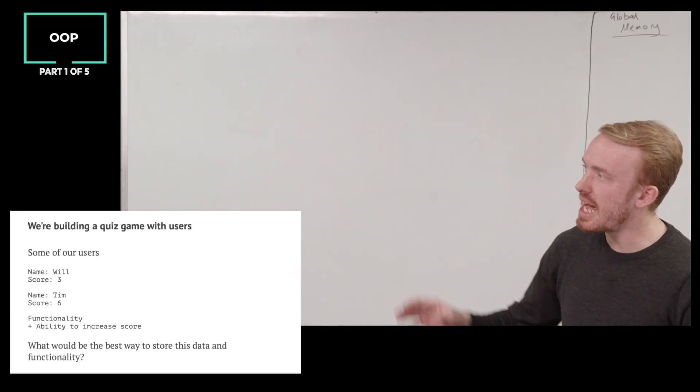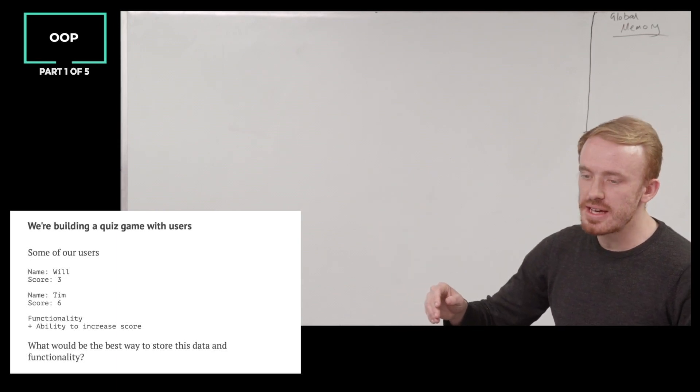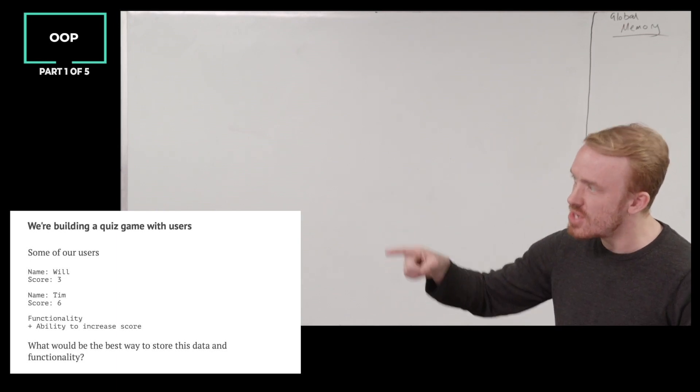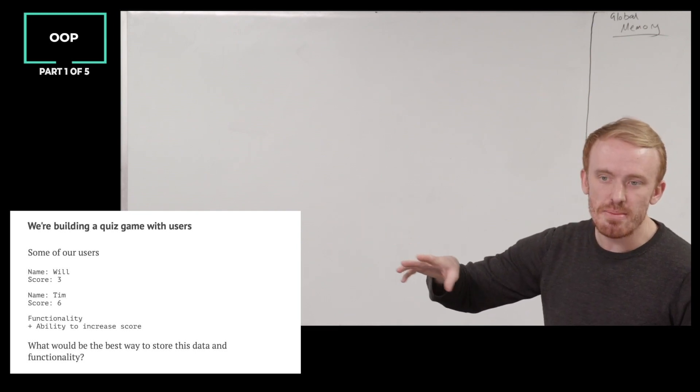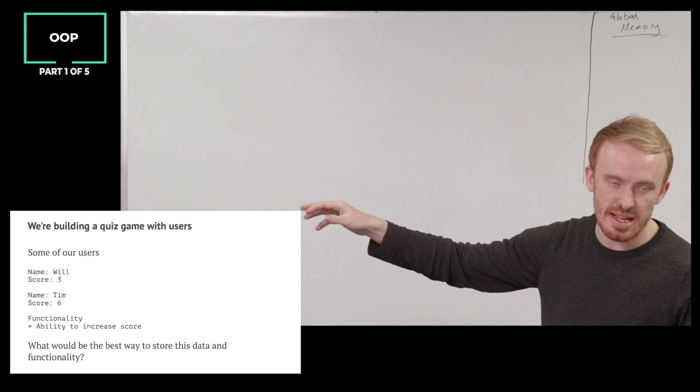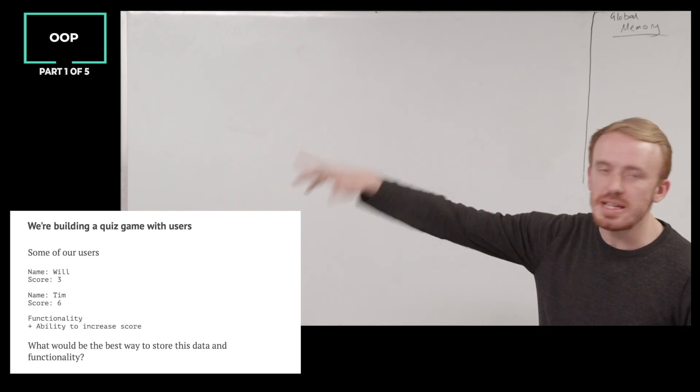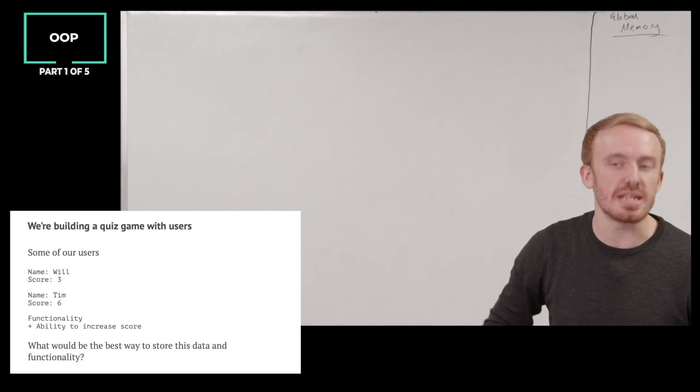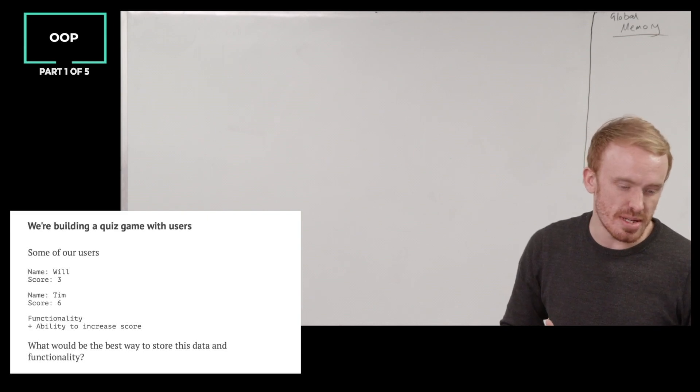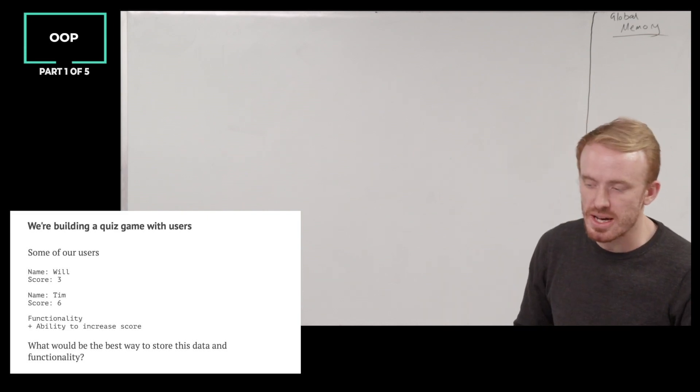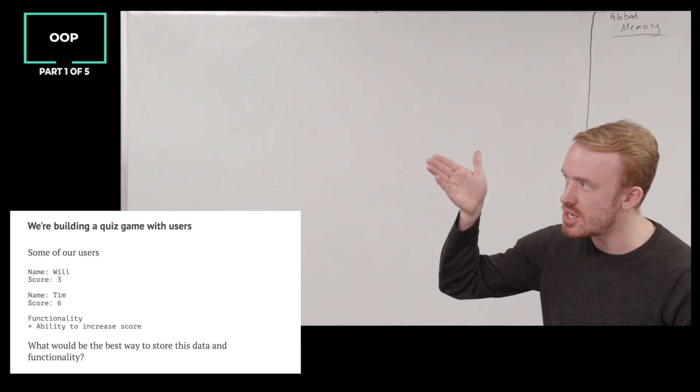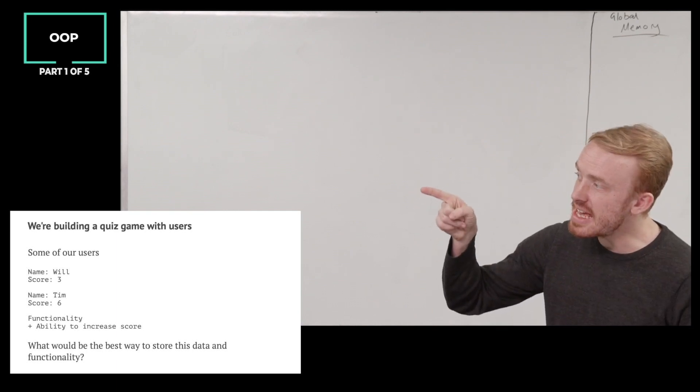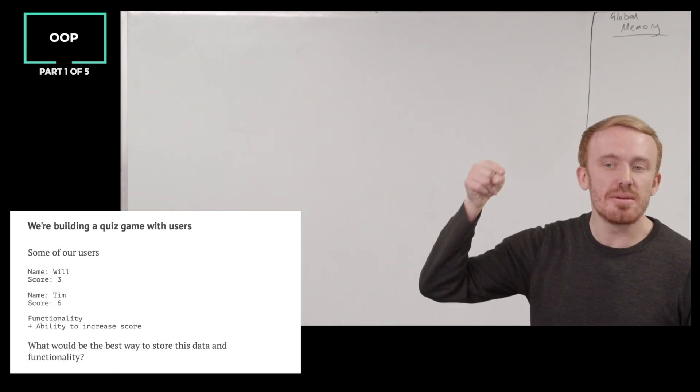So we're going to have to play a little bit of a sort of imaginary game of building an application at scale. We're going to build a quiz game. It's going to have users. And there, here we only have two users, named Will, score three, named Tim, score six. But imagine there's thousands of users all playing simultaneously with maybe many different data, many different properties associated with each user. A score, an avatar, a homepage, a time zone, a login state or a logout state, all these sort of pieces, all attached to each individual user.